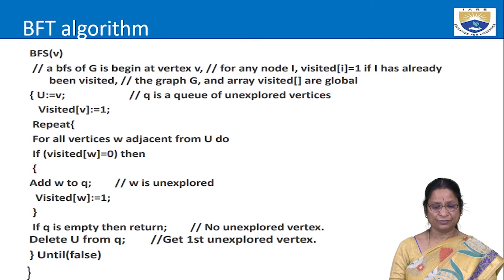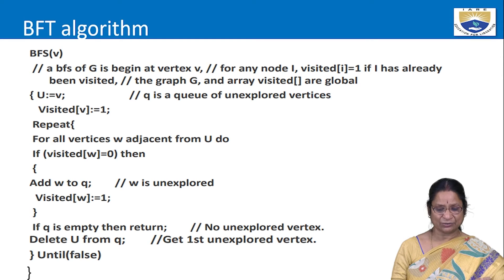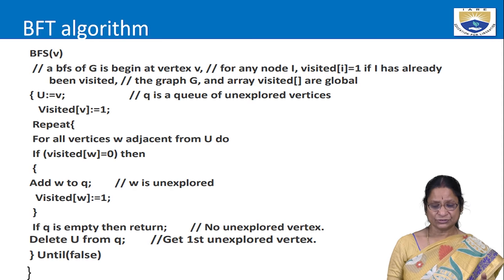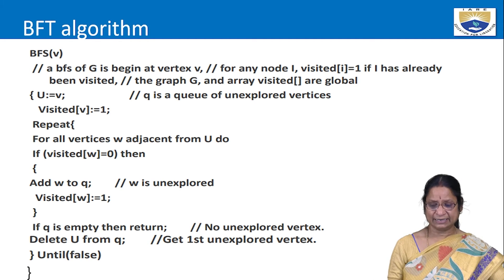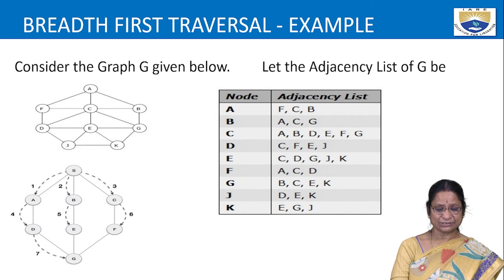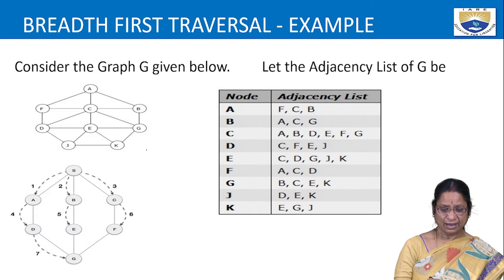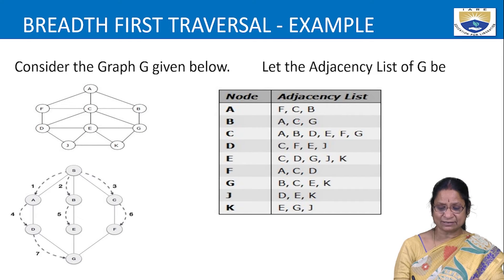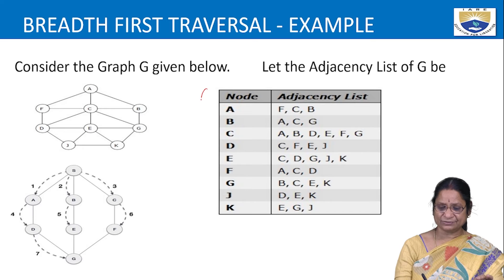Let us work through a BFS example on a given graph using its adjacency list. We start from node A. Adjacency list: A's neighbors are F, C, B; B's neighbors are A, C, G; and so on. We insert A into the queue (status 2), then process A and insert its neighbors F, C, B into the queue (status 2 for each). Next we delete F, process it, and check its neighbors A, C, D — A is status 3, C is status 2, so only D (status 1) is inserted.